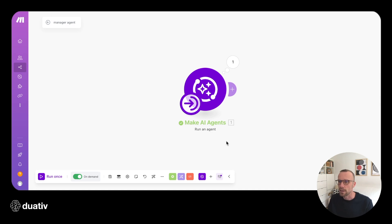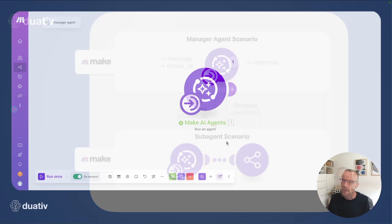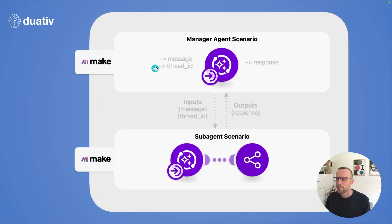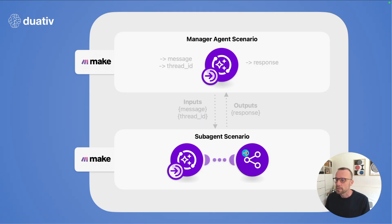That concludes our simple setup of a manager agent communicating with a sub-agent. To recap: we created a manager agent scenario and a sub-agent scenario. In the manager agent scenario, we called the manager agent with a message and a thread ID. The manager agent then called the sub-agent scenario using its toolkit via the scenario input and output. The sub-agent sent a response back, and the manager agent returned that response to us.